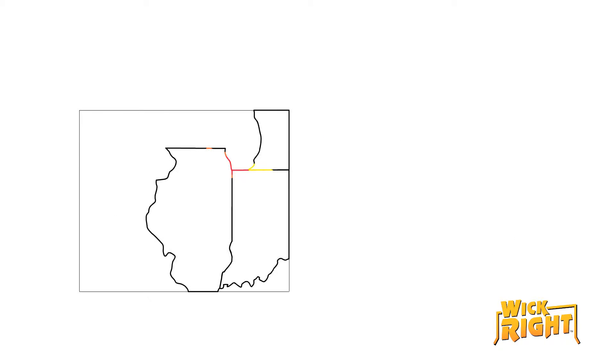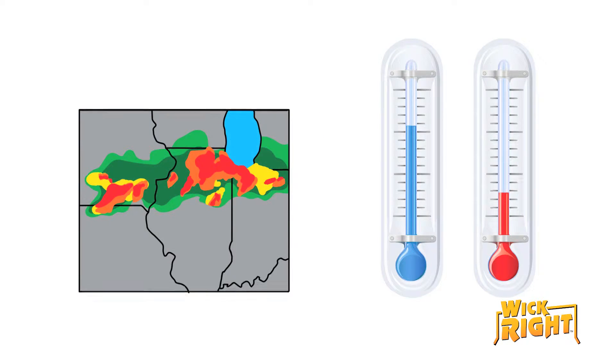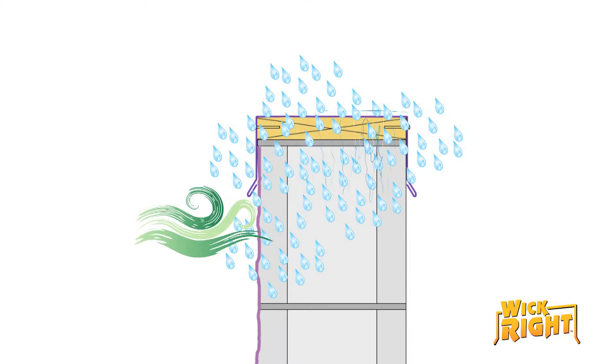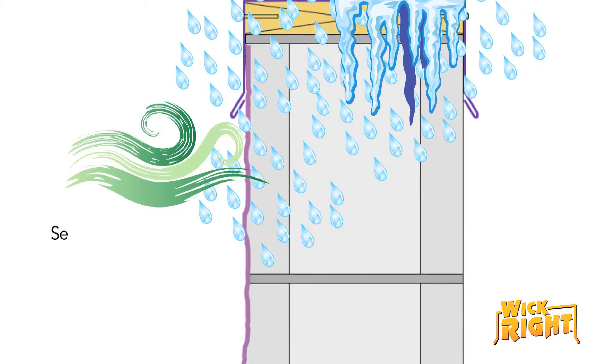Our harsh Chicago weather quickly erodes sealants and forces moisture into the porous concrete block and mortar. Driving rain, heavy winds, and snow soak the building and wear off the sealant sometimes in as little as five years.